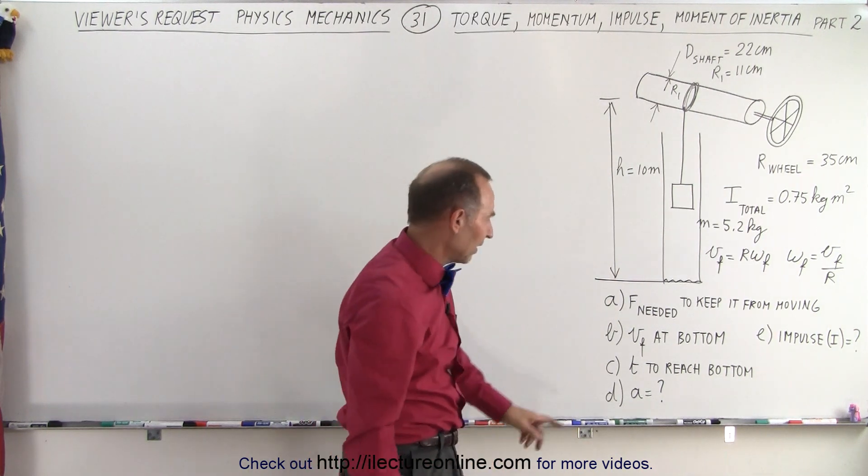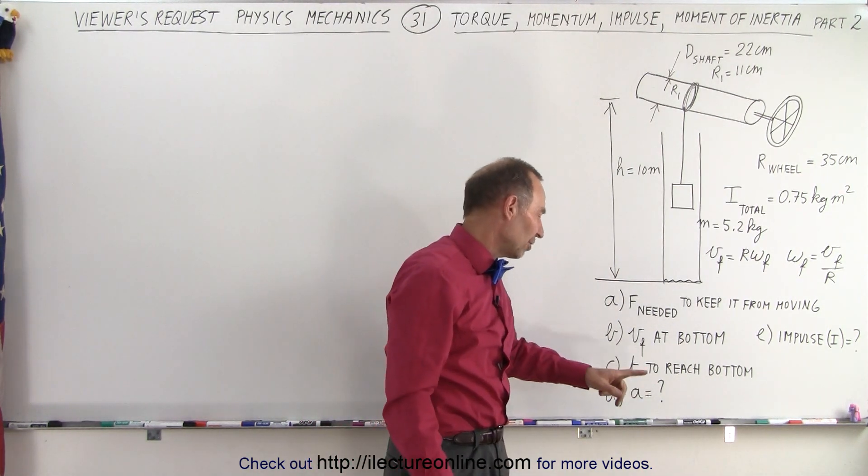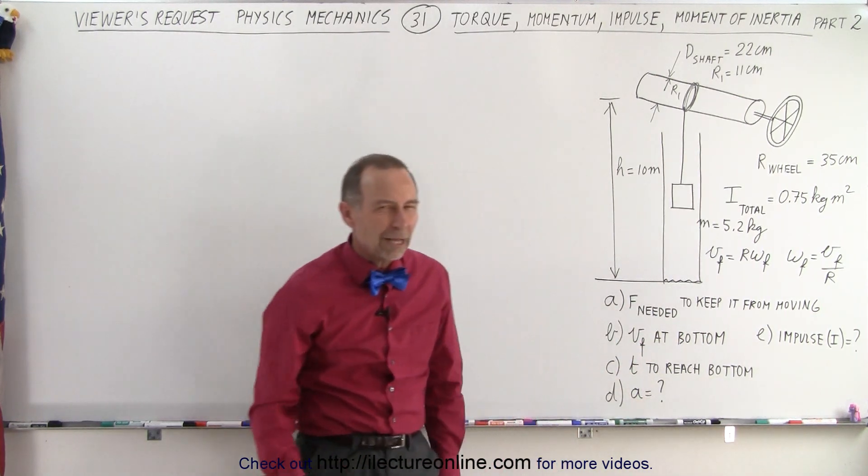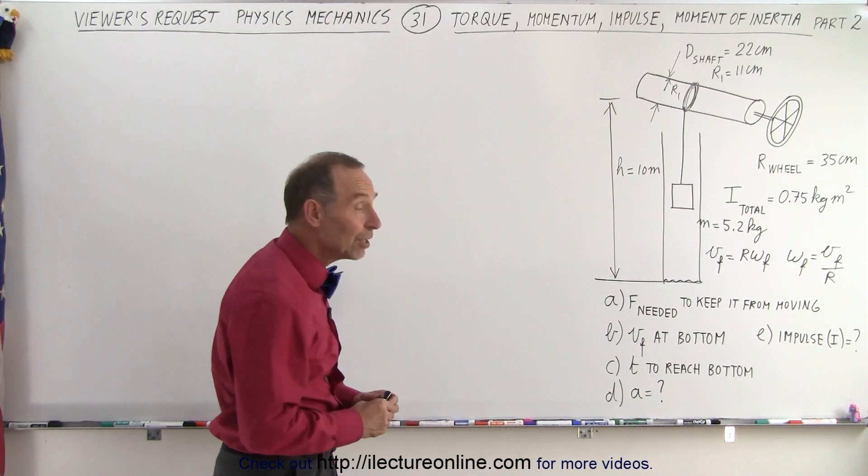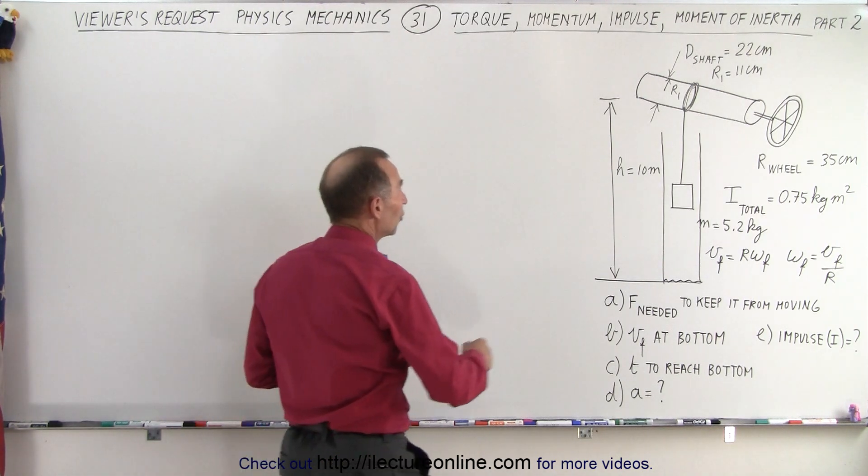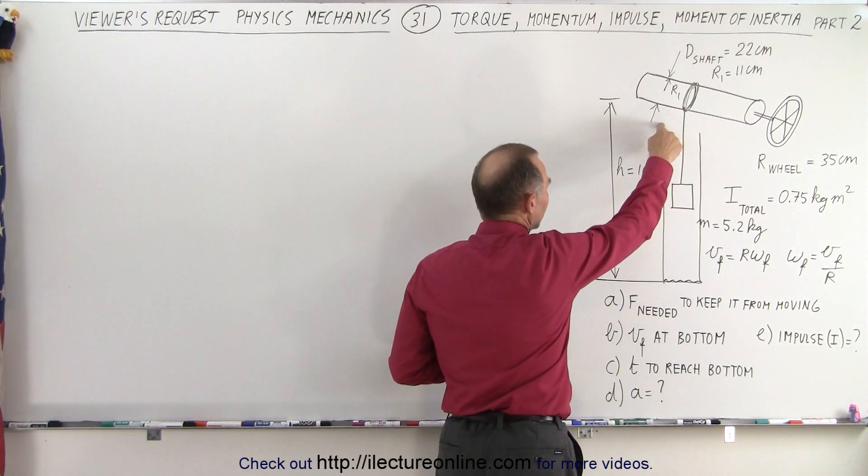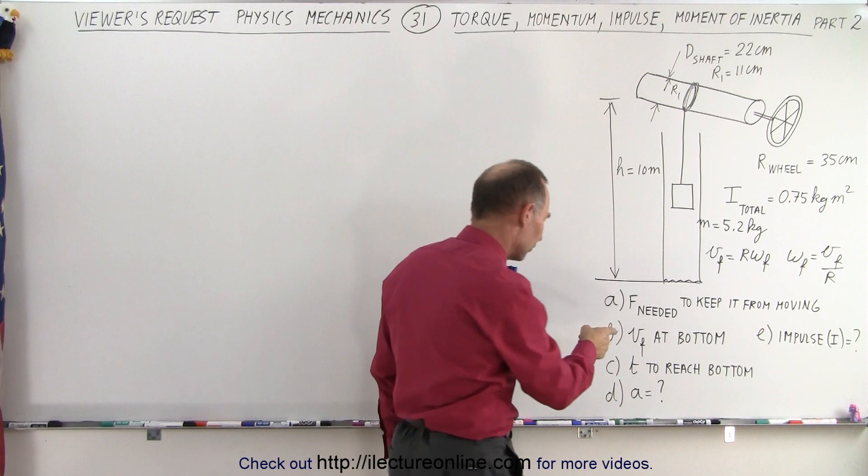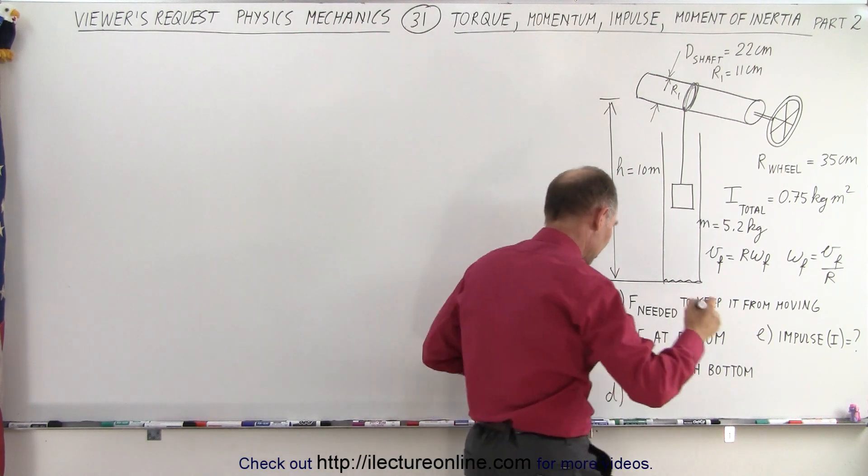It comes down and the whole thing turns. And now we're supposed to find out the time that it takes to reach the bottom, the acceleration on the way down, and the impulse. Now for this particular one, I think using the graphical method to find the time to reach the bottom might be the best. Because we know that the velocity at the top was 0 and the velocity at the bottom, we calculated that over here, but I forgot to write that down. So let me write that down.